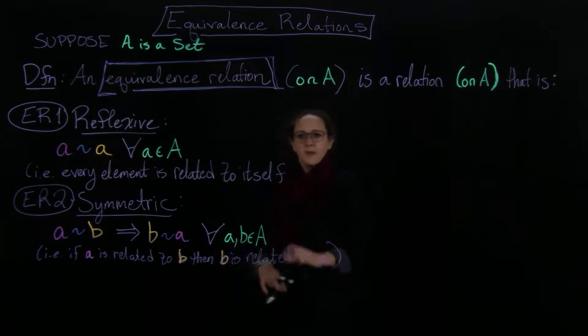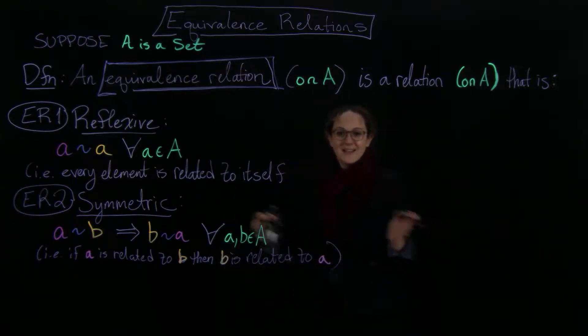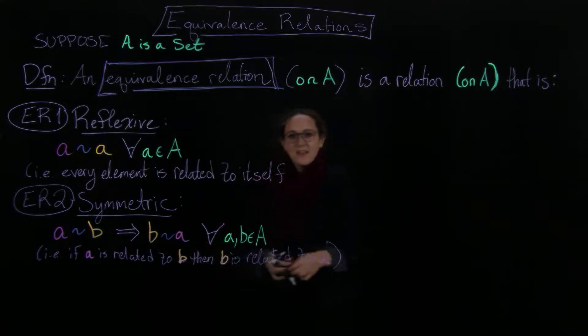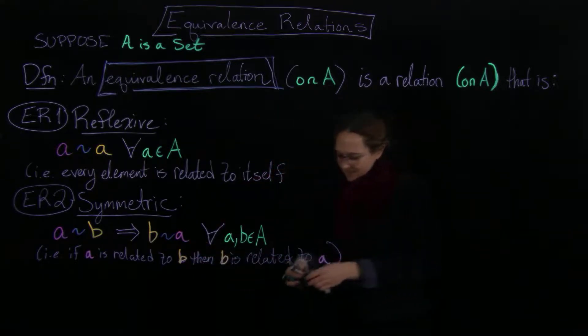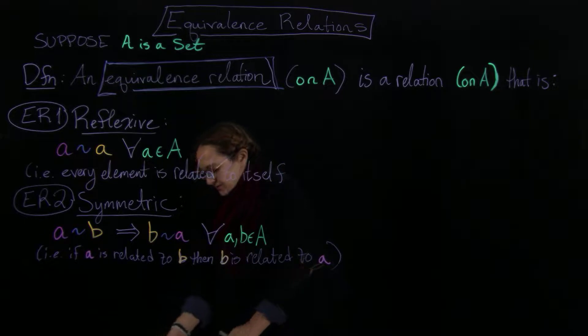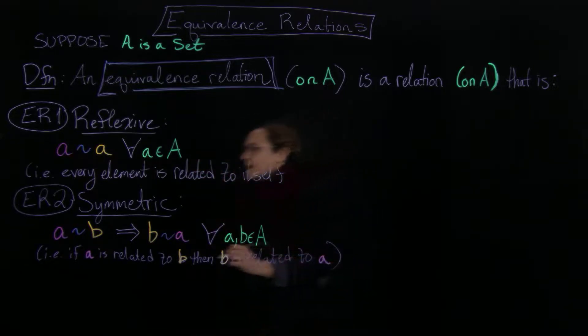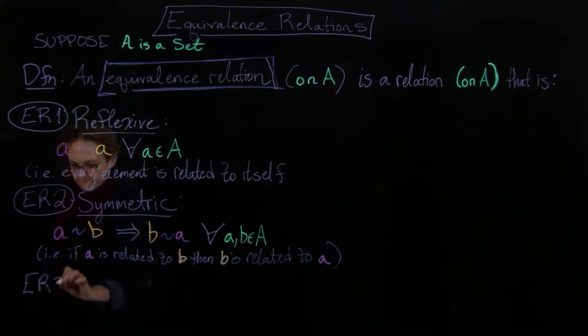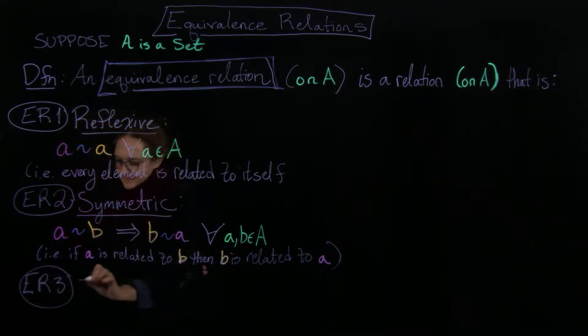So it has that kind of symmetry property. Symmetry-wise, it's called symmetric. The last one is transitivity. So, you know that this holds for a lot of things. Transitivity.